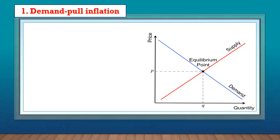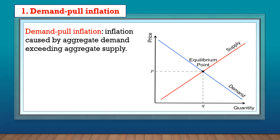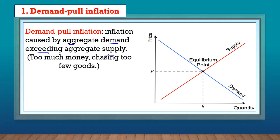Now let's look at the two types of inflation. We have demand-pull inflation. As the term suggests, this inflation is pulled by demand — there's too much demand. It is caused by aggregate demand exceeding aggregate supply. This causes inflation because you have too much money chasing too few goods. People have money and are demanding goods, but we don't have enough goods.